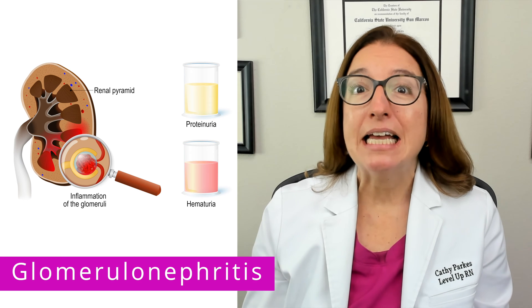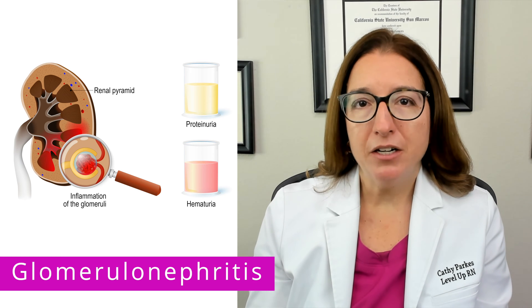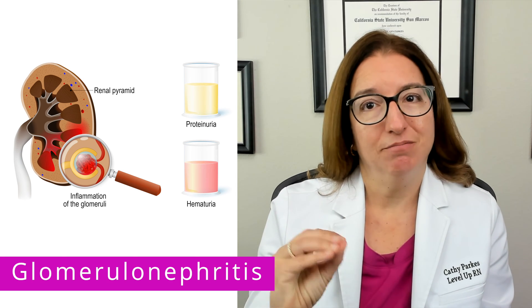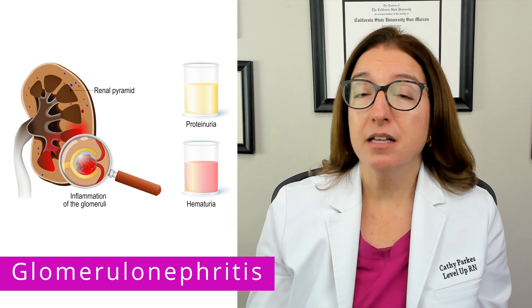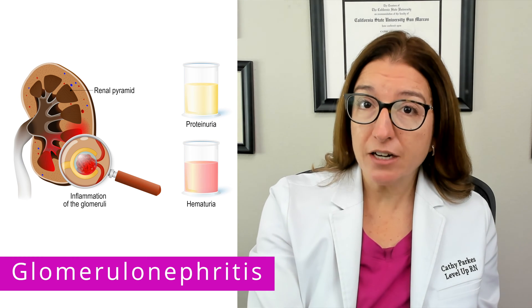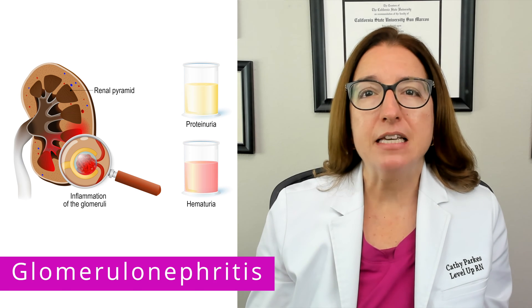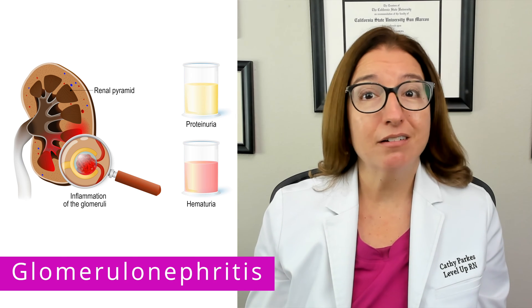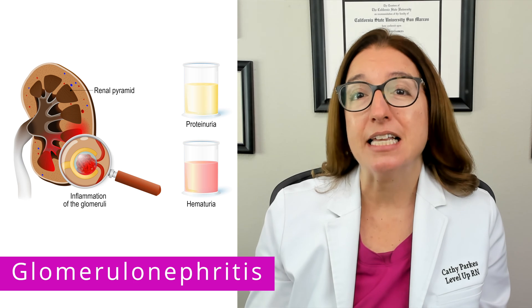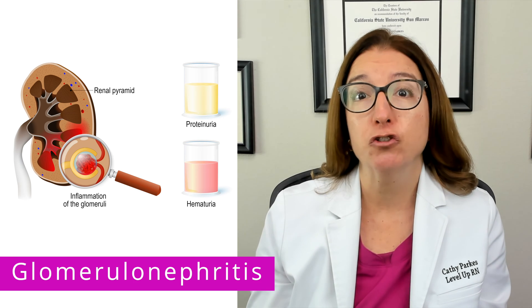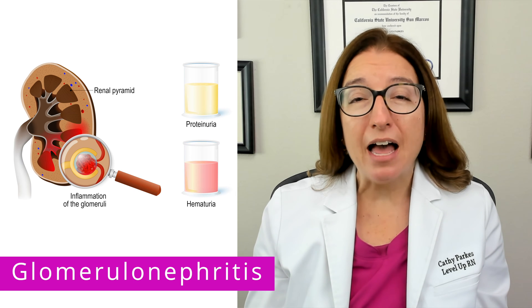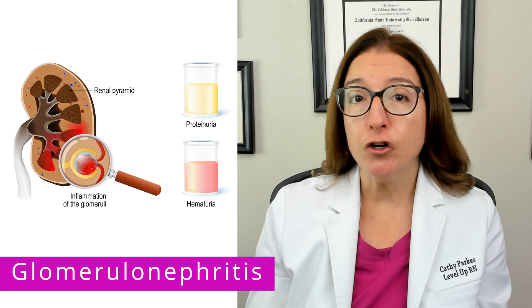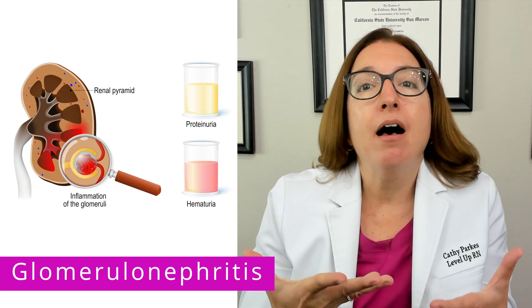Acute glomerulonephritis is inflammation of the glomeruli that often, but not always, follows a strep throat infection. With this disorder, the body's immune response to the streptococcal infection causes the collection of antigen-antibody complexes in the glomeruli. This in turn causes inflammation and a decrease in GFR, which is glomerular filtration rate. When we have impaired filtration in the kidneys, this causes a decrease in urine output and causes fluid to back up into the body.